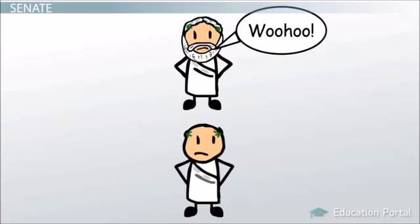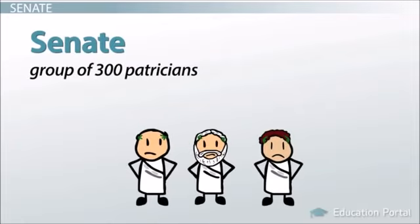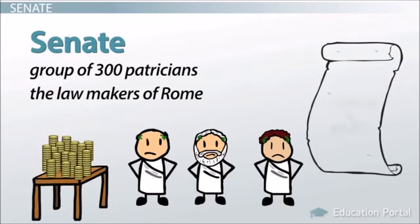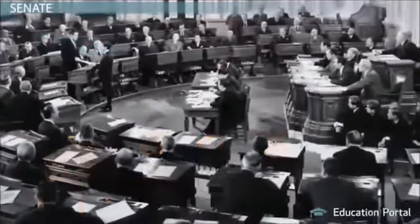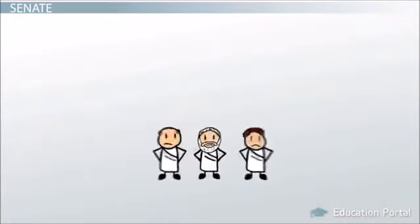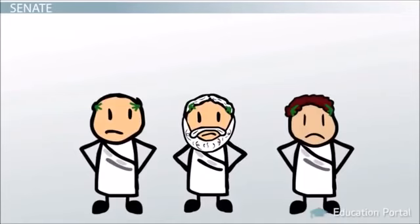Trying to make sure the Patricians could keep control, the consuls were elected from the Senate — a group of 300 Patricians who were in essence the lawmakers of Rome. They made decisions on spending while also controlling taxation and relationships with foreign powers. We can loosely compare the Roman Senate to the legislative branch of the American government. However, there are some major differences. Perhaps most obvious, the senators of Rome were not chosen by the citizens. They were chosen by the consul, and they were elected for life.